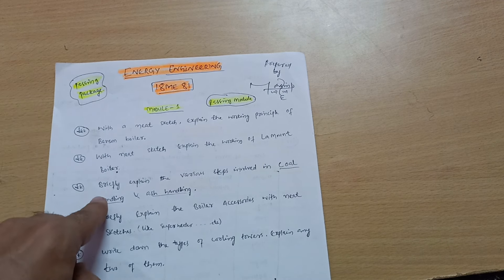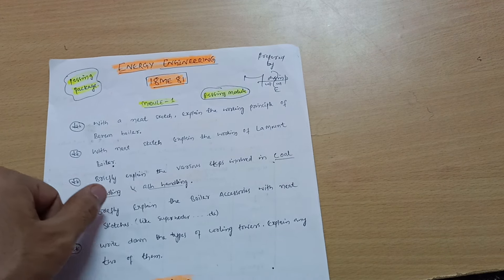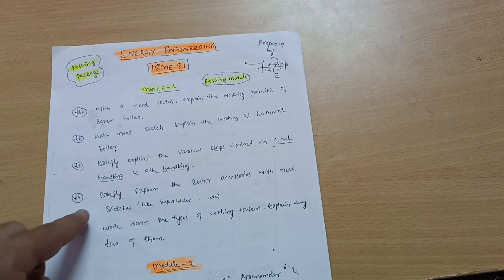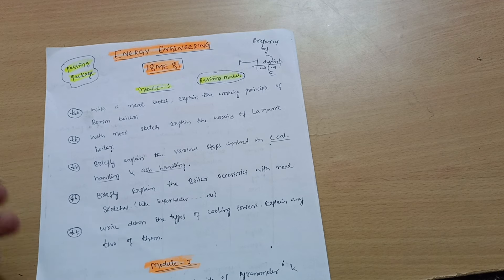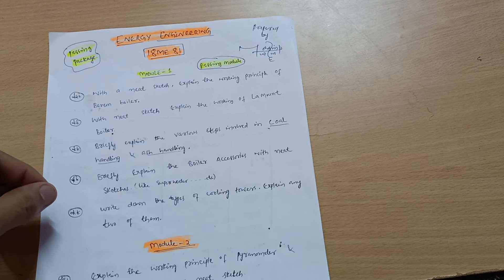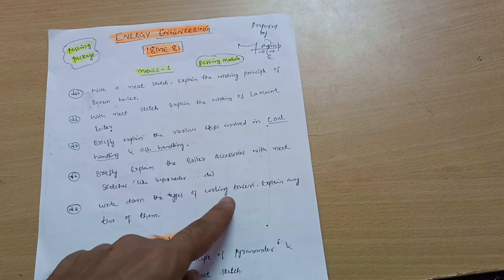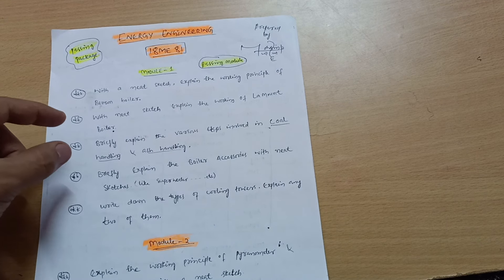Next is briefly explain the various steps involved in coal handling and ash handling. This is the most important one. Briefly explain the boiler accessories with neat sketches like superheater, air preheater. You have to go through these boiler accessories. Last but not least is write down the types of cooling towers, explain any two of them.